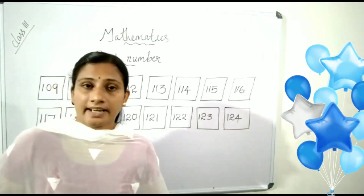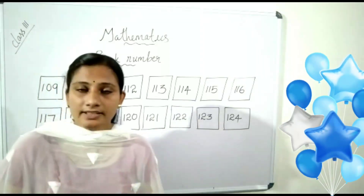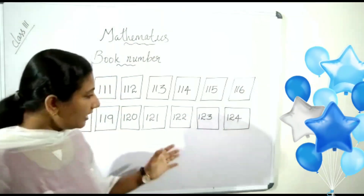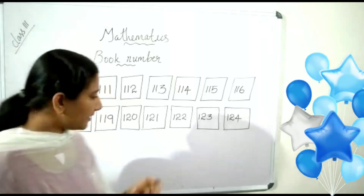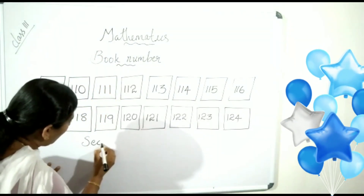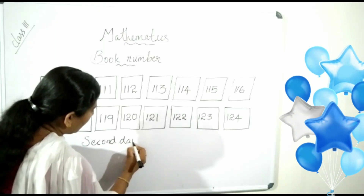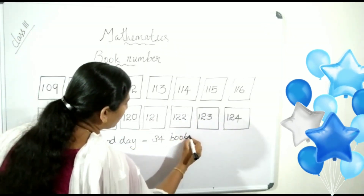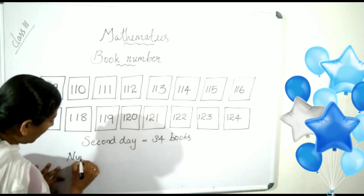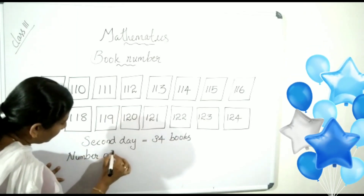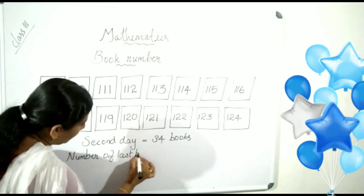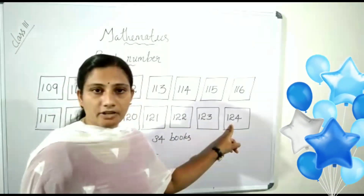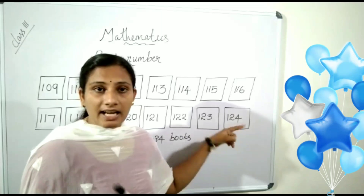Children, these books were collected on the first day. On the second day, they collected 34 books. Then, what is the number of the last book? On the second day, they collected 34 books. Then, number of last book — how do we find? First day, they collected books and gave the number 124. So, 124 is the last number.